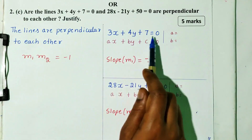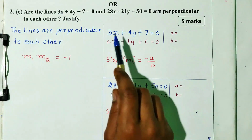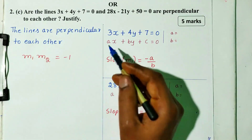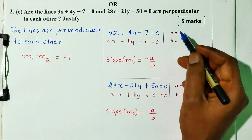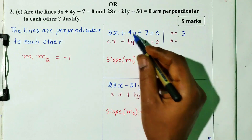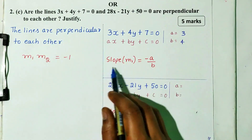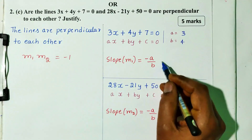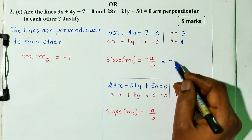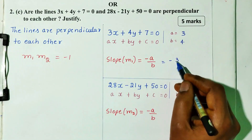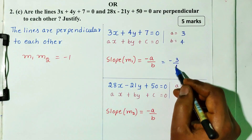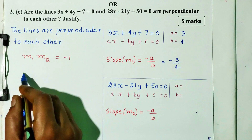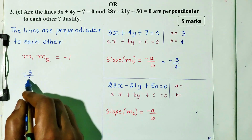The first equation is 3x plus 4y plus 7 equals 0. Comparing with the general equation ax plus by plus c equals 0, here a equals 3 and b equals 4. So slope m1 equals minus a divided by b, which is minus 3 divided by 4.